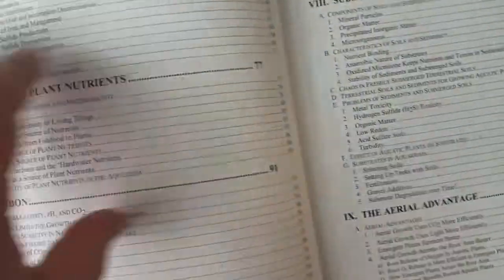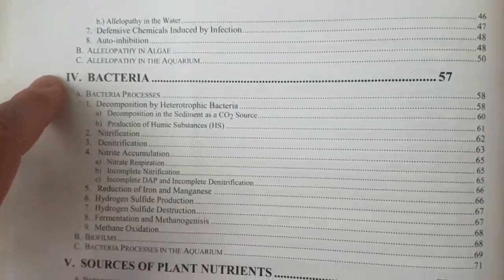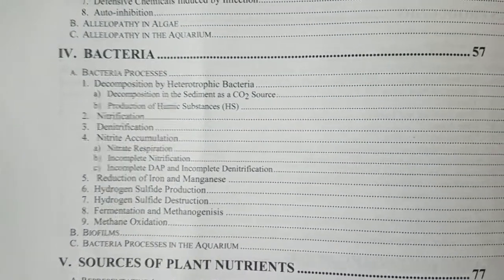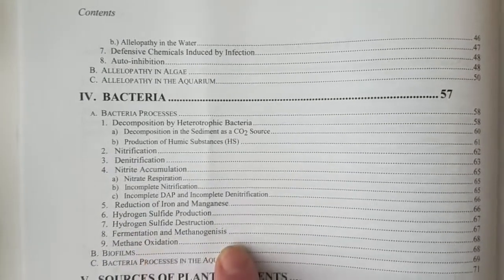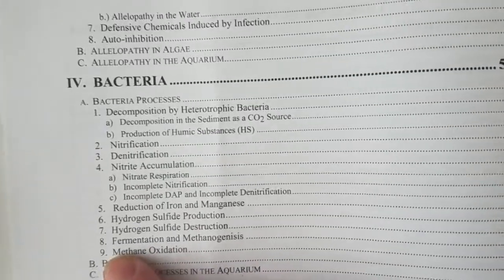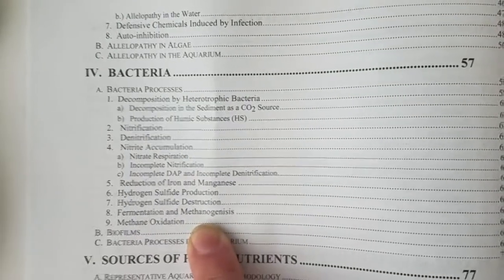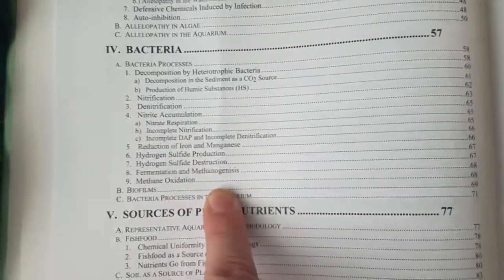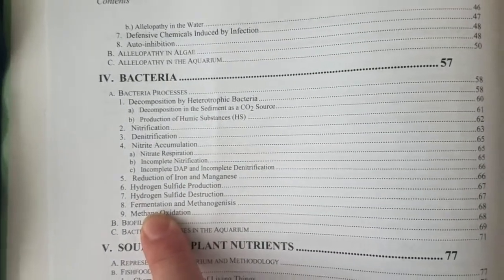You have a section on bacteria that goes through bacterial processes — your basic aerobic processes and then anaerobic processes, such as hydrogen sulfide production, fermentation, and methanogenesis. These happen when bacteria are out of electron acceptors — they don't have oxygen or nitrate to use. They use their last resort, which gives them the least energy, using CO2 as the electron receptor to breathe. This produces methane, alcohol, acetic acid, and very nasty stuff.